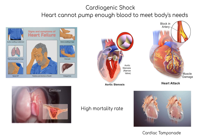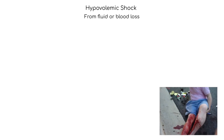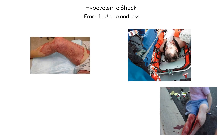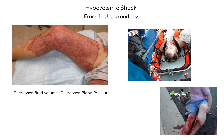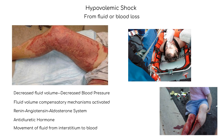Cardiogenic shock has a high mortality of greater than 70%. Hypovolemic shock occurs when there is a significant loss of blood or fluid volume in the body, such as from bleeding, dehydration, or severe burns. The reduced blood volume leads to a decrease in blood pressure, which can cause organ damage and failure. Fluid volume compensatory mechanisms are activated during hypovolemic shock, which include the activation of the renin-angiotensin-aldosterone system, antidiuretic hormone secretion, and movement of interstitial fluid into the vascular system.